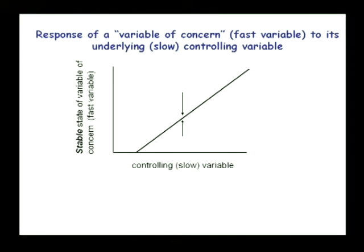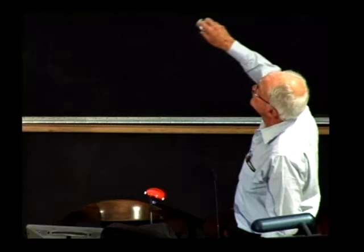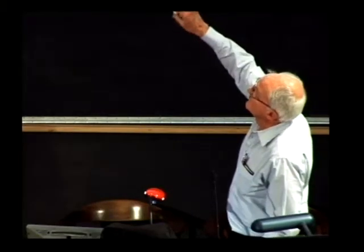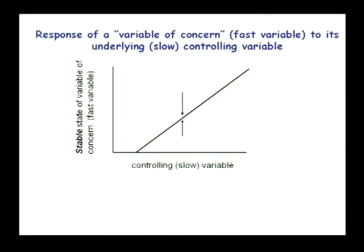This is the kind of idea that drove equilibrium ideas of ecosystem dynamics. This is a stable state of some variable of concern, often called a fast variable, and this was the controlling slow variable. You could think of these as nutrients in the water and the amount of coral up that axis. If you have a fixed amount of this controlling slow variable, that will be the stable amount of the response variable — the system heads to somewhere along that line. And of course that's wrong most of the time.